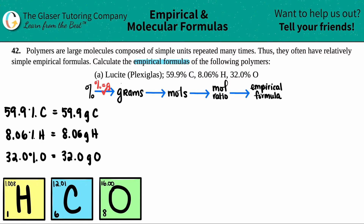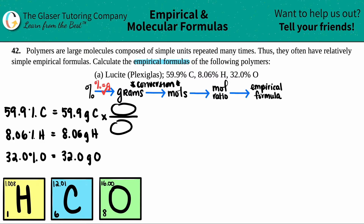Now we've got to go from grams to moles. Grams to moles is just a conversion using the periodic table. When we do a conversion, we think in terms of a ratio — something in the numerator and something in the denominator. For each element, I'm going to set up that ratio. I don't want the grams unit, so grams of carbon, grams of hydrogen, and grams of oxygen all go on the bottom.